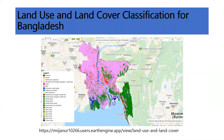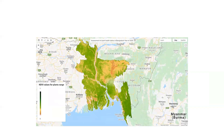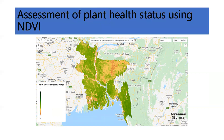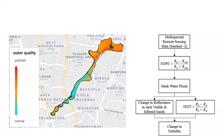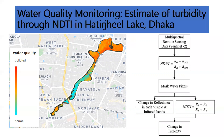This is another task: a land cover classification map of Bangladesh — a web application you can access from the link. This is another task for plant health status assessment using NDVI via Google Earth Engine for the whole country. This is another task for water quality analysis of Hathirjheel Lake — showing turbidity change. High turbidity means the water is polluted; low turbidity means the water is normal.